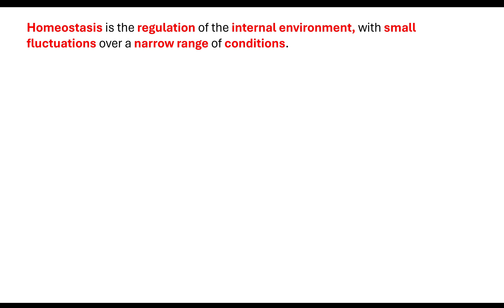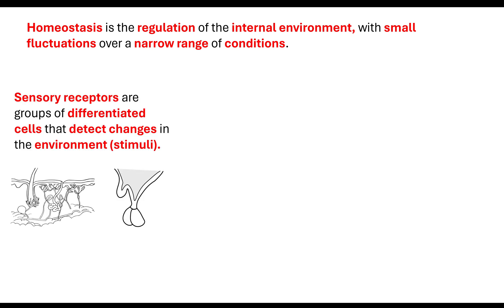So how does our body know about these internal environments? It's to do with sensory receptors. I have done a whole video on sensory receptors, but just to remind you, sensory receptors are basically groups of differentiated cells that are there to detect changes in the environment. Those changes are called the stimuli.